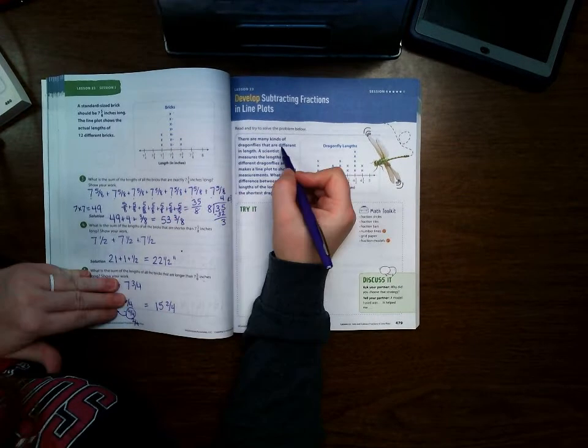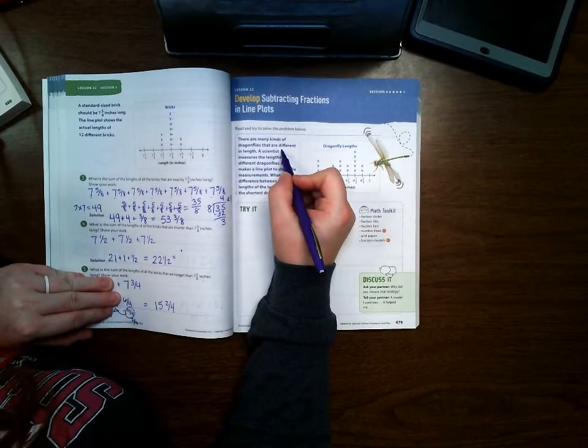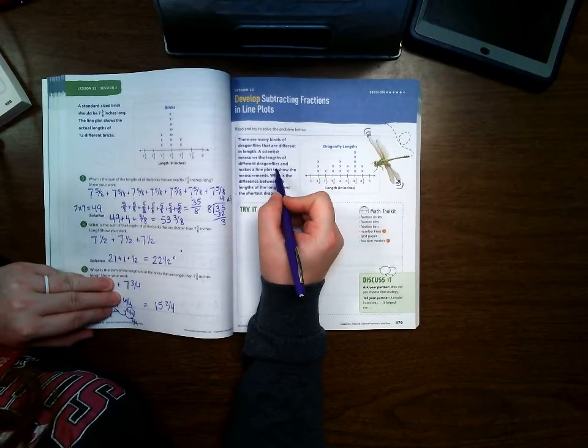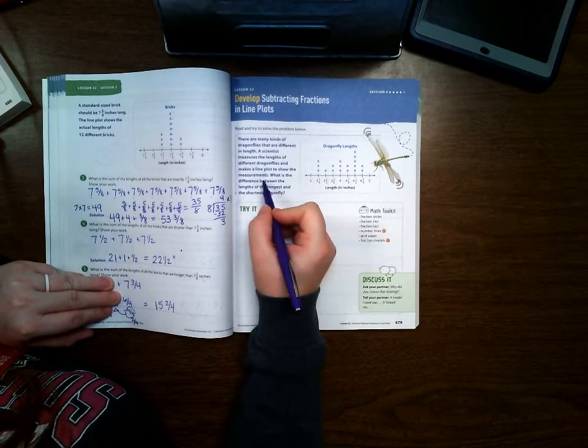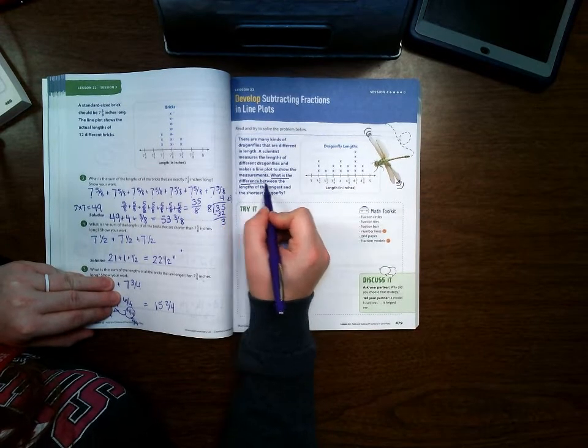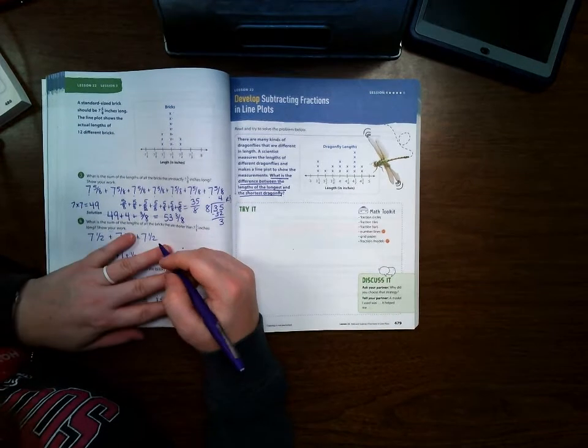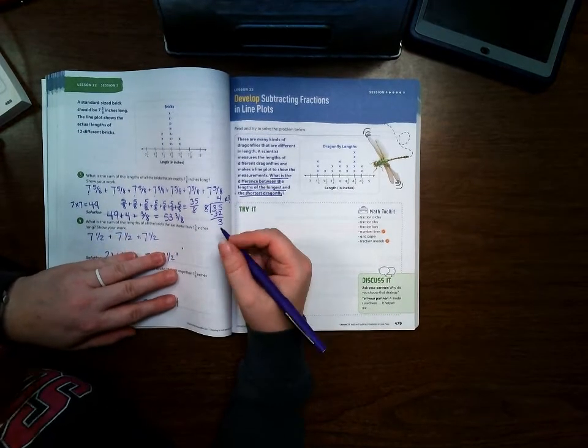There are many kinds of dragonflies that are different in length. A scientist measures the length of different dragonflies and makes a line plot to show the measurements. What is the difference between the lengths of the longest and the shortest dragonfly?